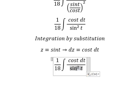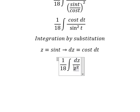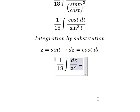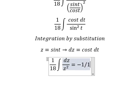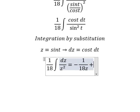So this one we change for z square. This one we change for dz. The integration of this one, we have negative 1 over 18 z. And we put about c.